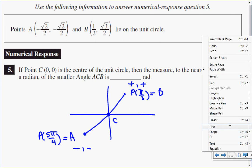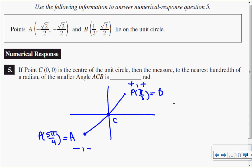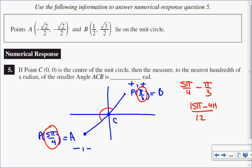To find the measure of angle ACB, I take 5 pi over 4 — my ending point — and subtract pi over 3, which is my beginning point. Using a common denominator of 12: 5 pi times 3 minus 4 times pi gives 15 pi over 12 minus 4 pi over 12, which equals 11 pi over 12.